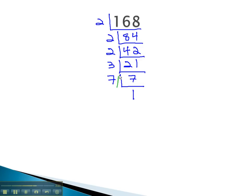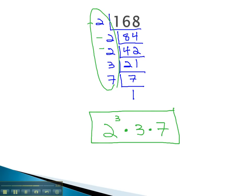We can now use these numbers to list out the prime factorization. 2 to the third power, because we have 3 factors of 2, times 3 times 7 is the prime factorization, or the list of prime numbers that multiply to 168.